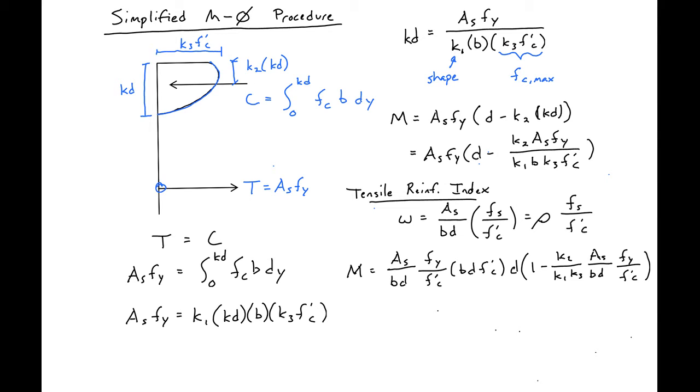We multiplied by F'c over F'c, multiplied by Bd over Bd, and then factored out D from our expression.